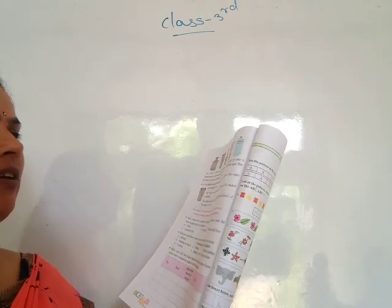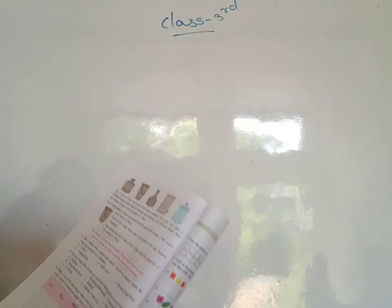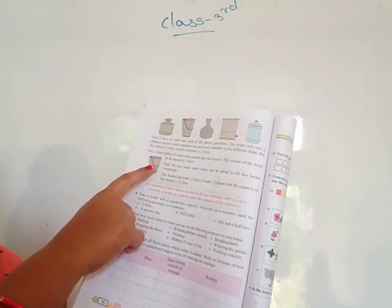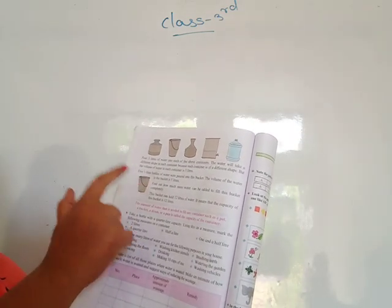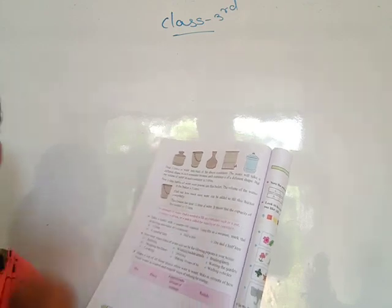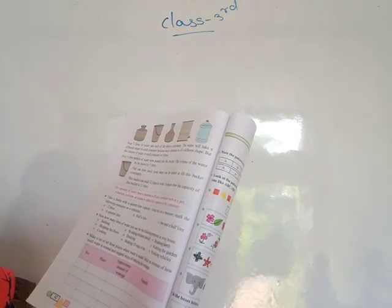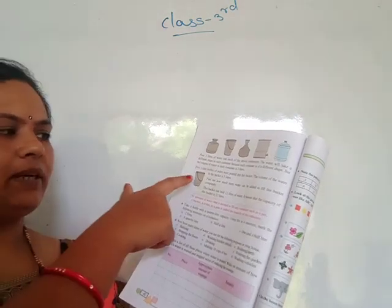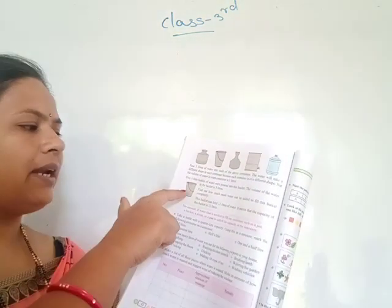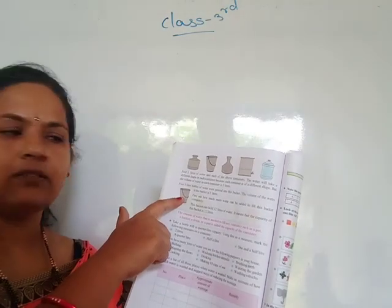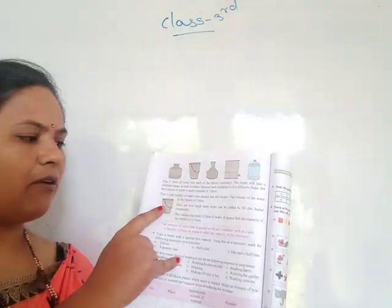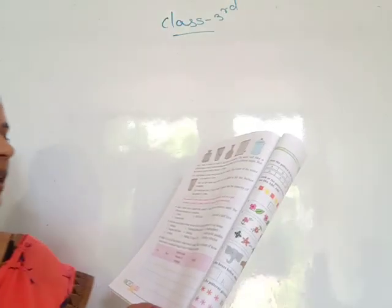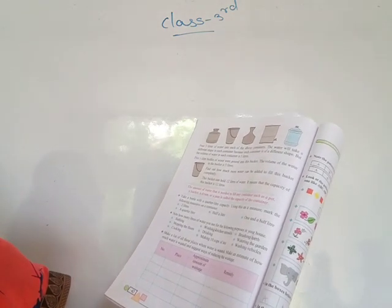Five one-liter bottles of water were poured into this bucket, so the volume of water in the bucket is five liters. Find out how much more water can be added to fill the bucket completely. This bucket can hold 12 liters, but currently only five liters are in it. The capacity of this bucket is 12 liters.